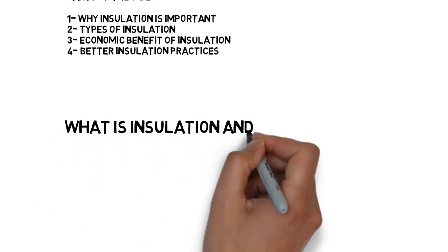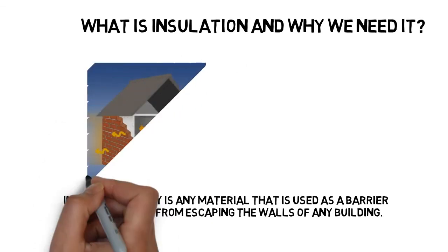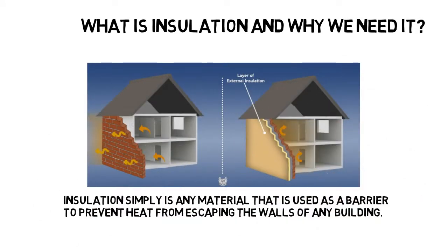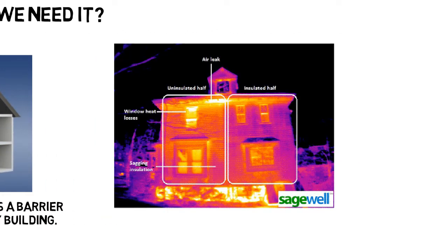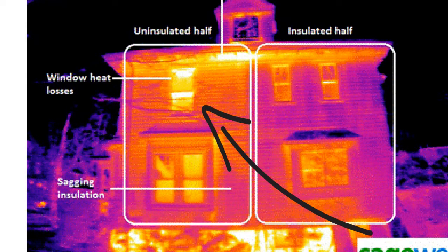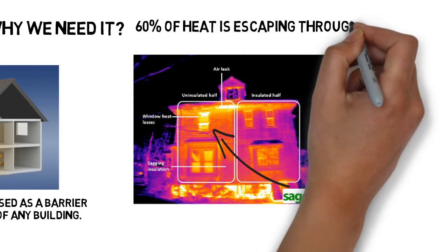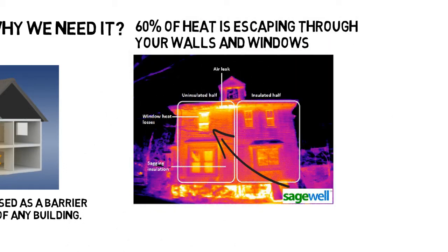First off, what is insulation and why do we need it? Insulation is any material used as a barrier to prevent heat from escaping the walls of your home or any building. Look at this picture — this is a thermal image of an ordinary home. You can see that the left part of the house is wasting energy because it is not well insulated. Heat is constantly escaping your home through the windows and walls by up to 60%. This is where good insulation becomes almost essential for your financial sake.